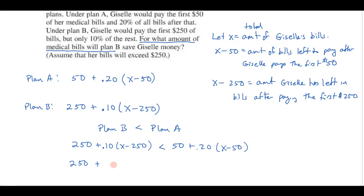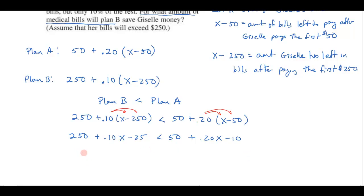So I've got 250 plus 0.10x and then I have to distribute the 10%. Likewise on this side I'll have to distribute the 20%. 10% of 250 is 25. Here I'll get 20% of x and I think 20% of 50, 10% would be 5, so 20% would be 10, minus 10. So let's keep going here.